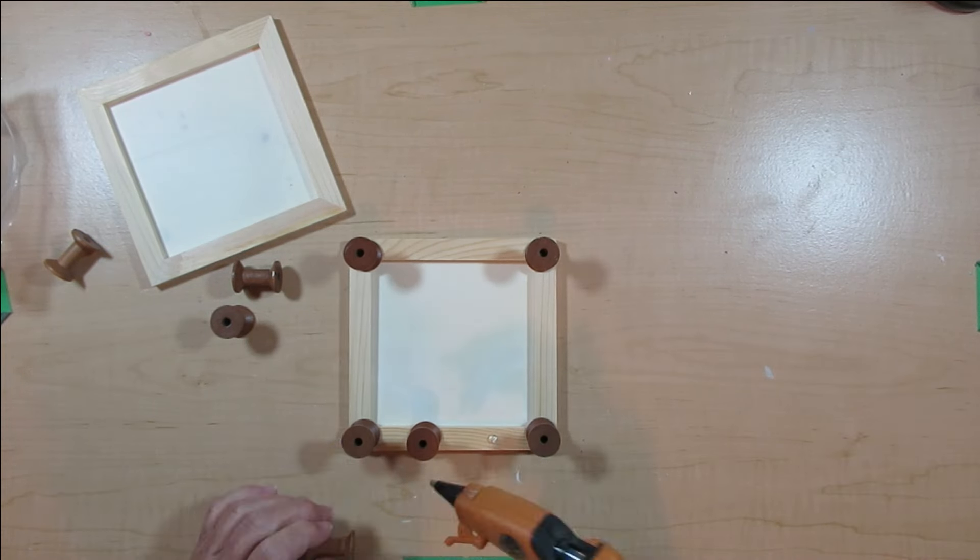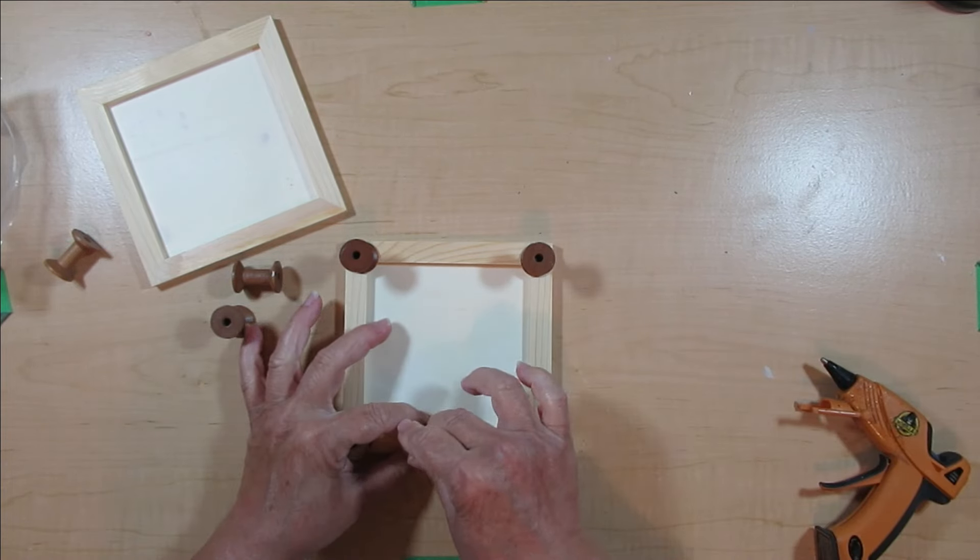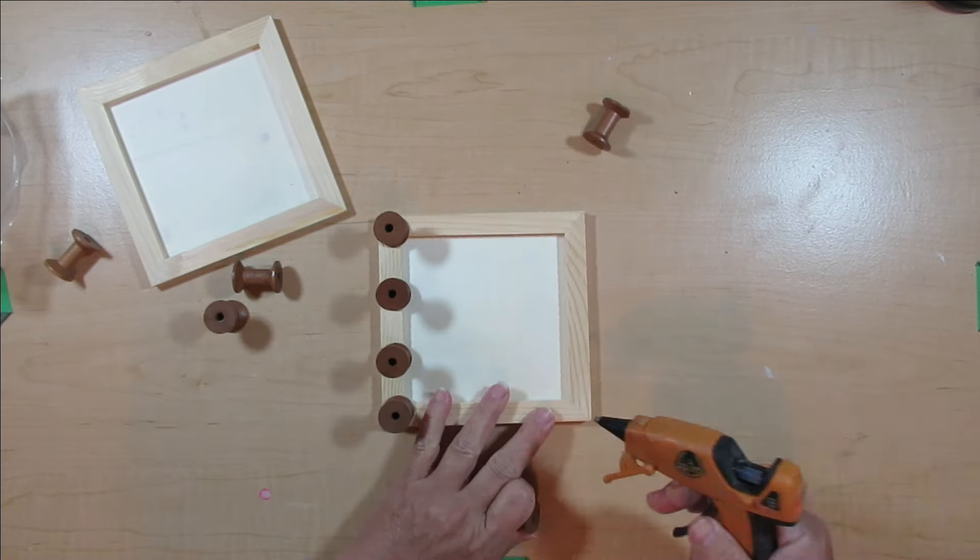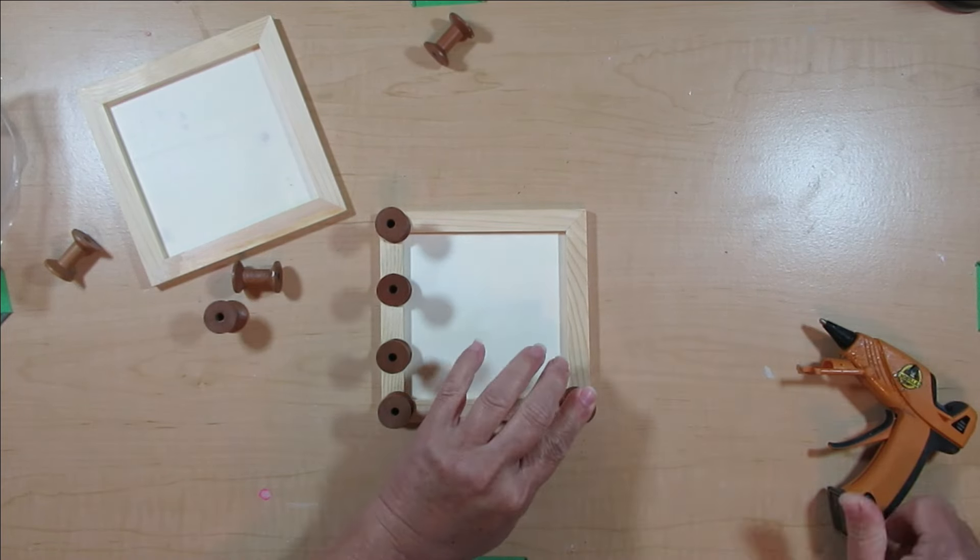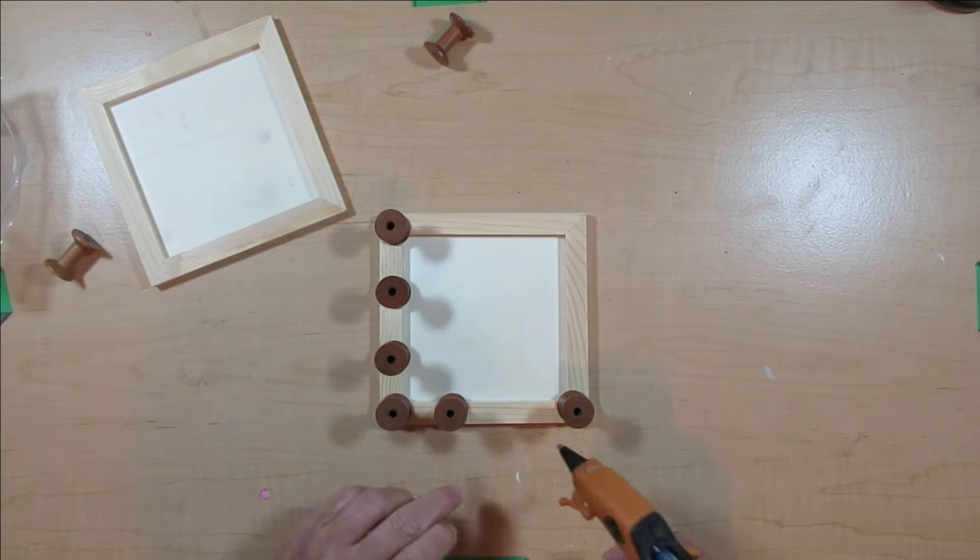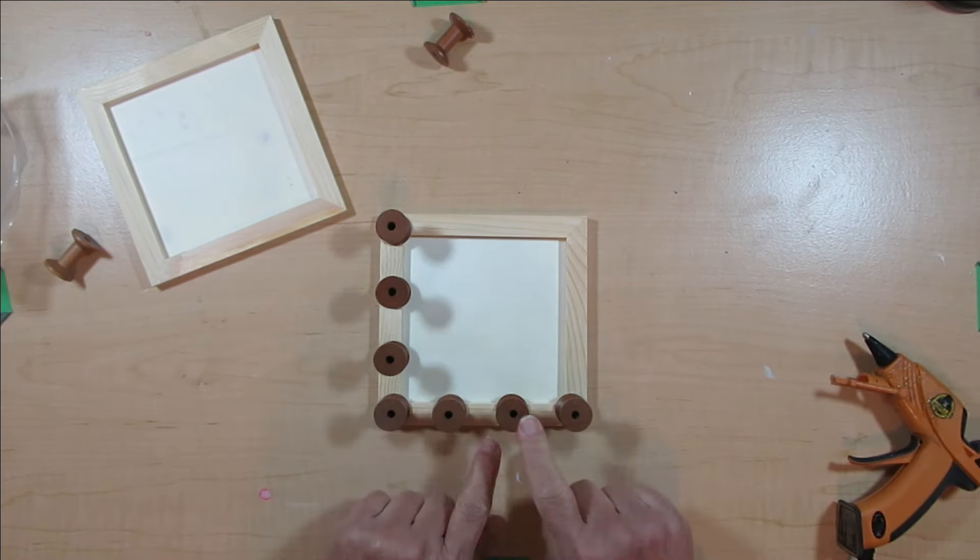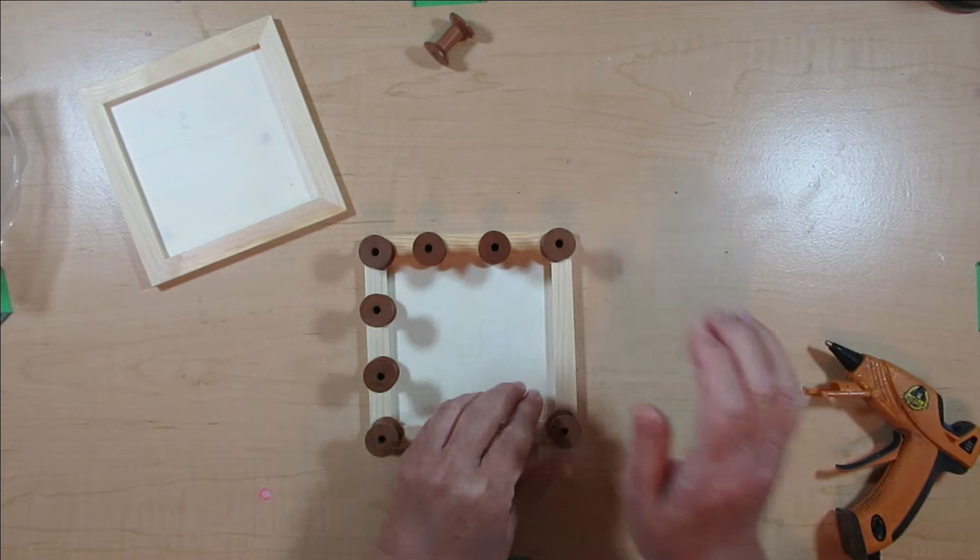One thing I do want to mention, if you're going to be creating a project similar to this, you might want to paint the inside panels the color that you're going to be painting the rest of the riser. Just because I wasn't thinking and I got too excited, I started gluing everything together and then realized I can't paint the inside. So just keep that in mind when you're creating a project like this.